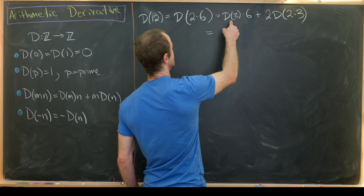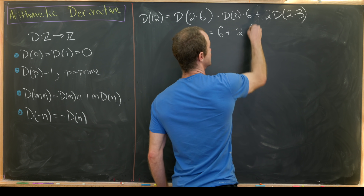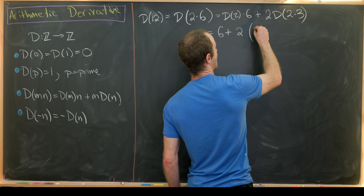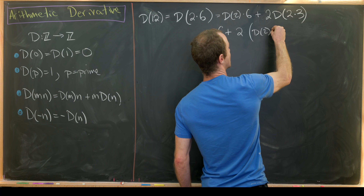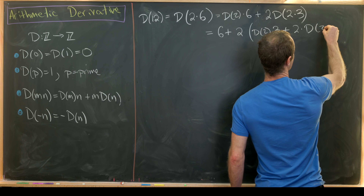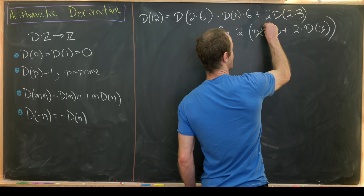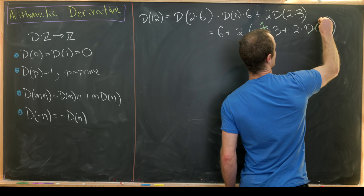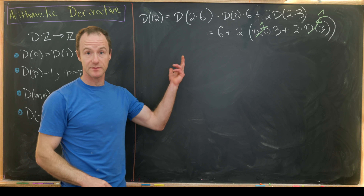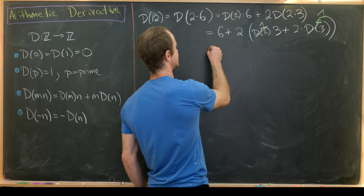Now d of 2 equals 1 because 2 is prime, giving us 6, plus 2 times — splitting d(2·3) using the Leibniz rule again. Both 2 and 3 are primes so we get 1 in each case, giving us 3 plus 2 times 2, so 10 plus 6 equals 16.